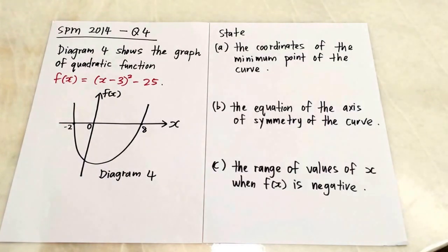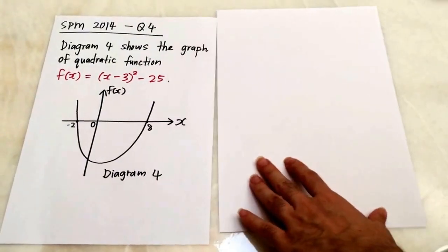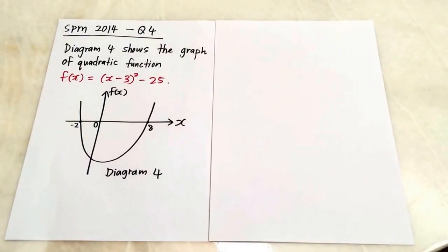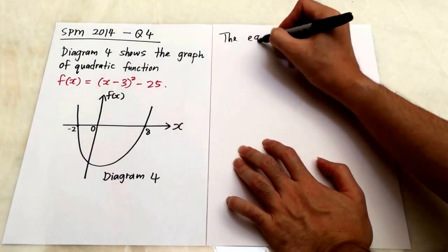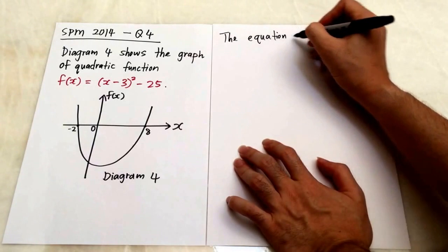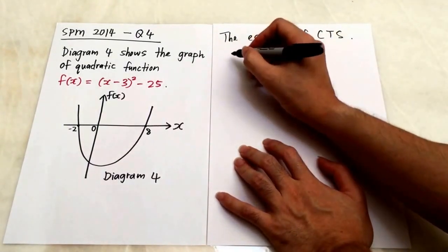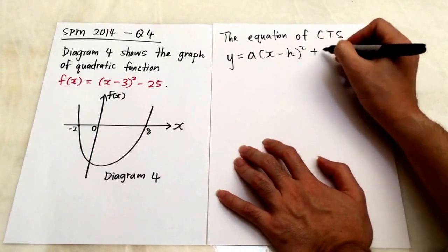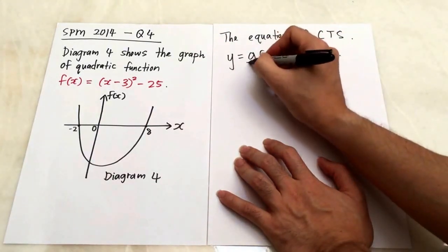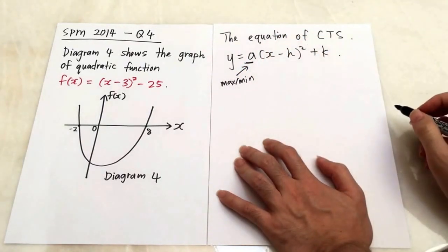Before I show you how to do parts A, B, and C, I'm going to teach you some basics. The general equation for completing the square is y equals A times (x minus h) squared plus k. The value A decides whether your graph is maximum or minimum — it's very important.